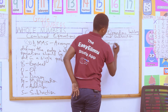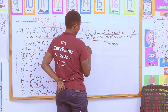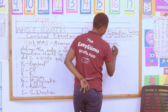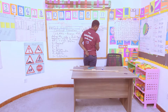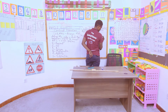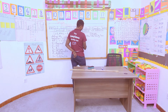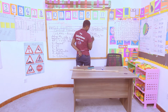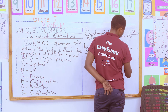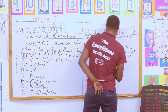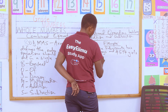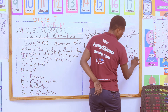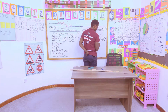Kieleweke Sub-County has 2,697 boys and 4,517 girls in public secondary schools.